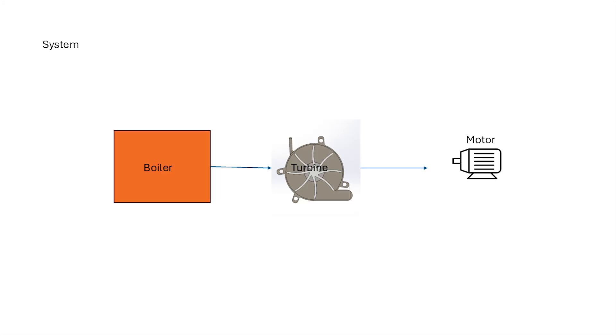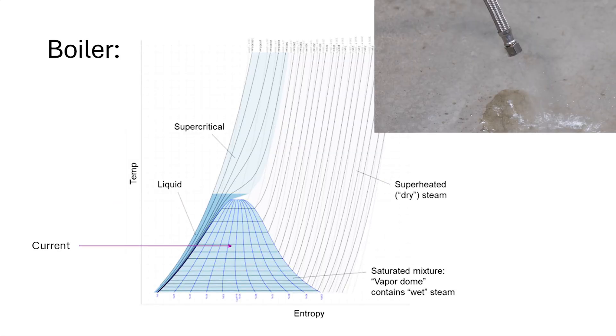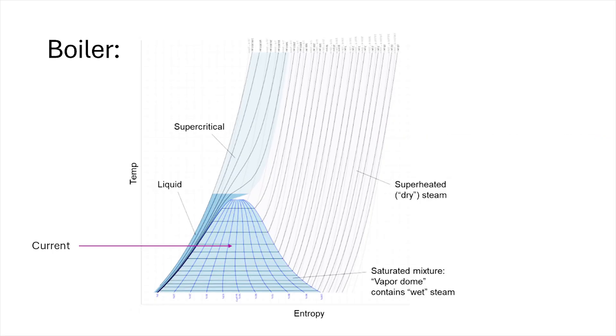Looking at our system, we can start by analyzing the steam, the turbine, and then finally the results from the motor. Just looking at the outlet, we can tell that we definitely have a saturated mixture, also known as wet steam, which means there's tons of suspended water droplets being left behind in our turbine.